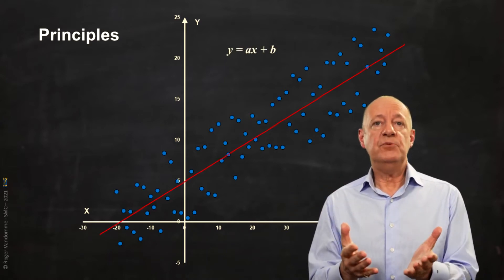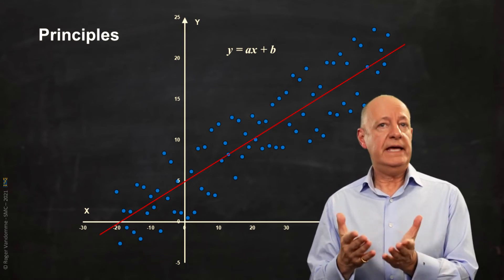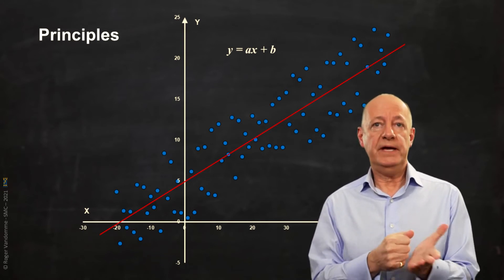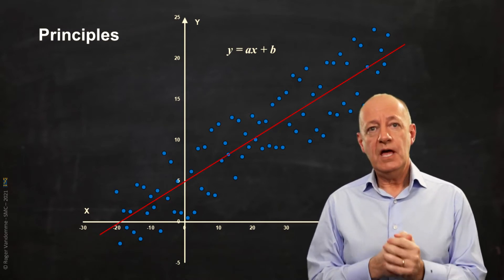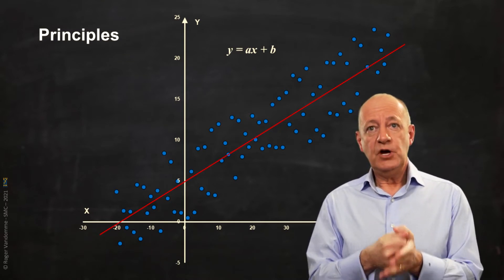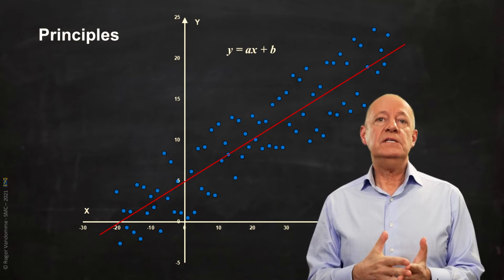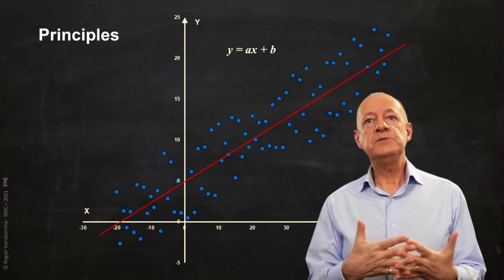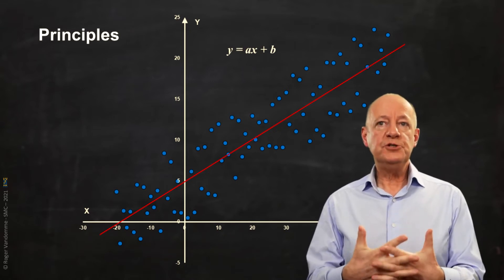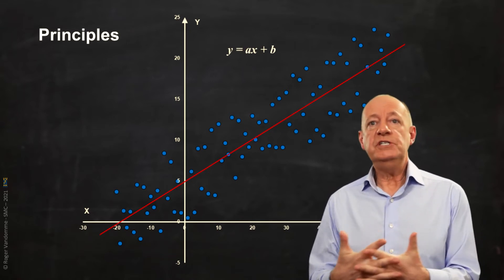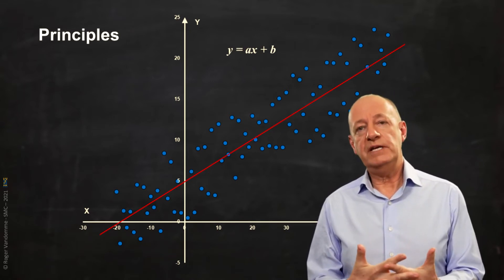This line has a formula, y equals ax plus b, where a is the slope and b the origin. If we know x, using the formula of our line, we can deduce the expected value of y, with a certain margin of error, which is all the weaker as our correlation is strong.